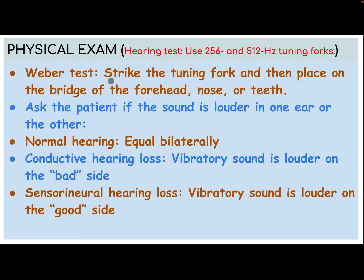Weber test: strike the tuning fork and then place it on the bridge of the forehead, nose, or teeth. Ask the patient if the sound is louder in one ear or the other. Normal hearing: equal bilaterally. Conductive hearing loss: vibratory sound is louder on the bad side. Sensorineural hearing loss: vibratory sound is louder on the good side.